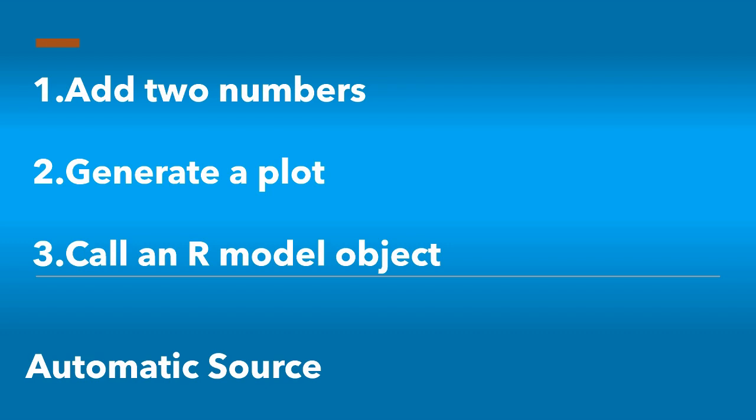And then in our third and final example, we'll show a really common use case, which is where we want to take an R model object and convert that into an API so that we can make an API call, get a prediction from an R model object, and then return that prediction back into our other environment, such as Python.